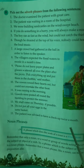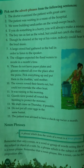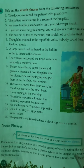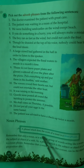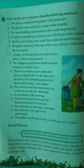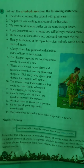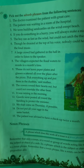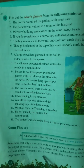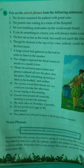Last of all, the noun phrase. A phrase which does the work of a noun is a noun phrase. Remember that only a noun, or a word or group of words acting like a noun, can be the subject or object of a verb. So a phrase which is the subject or object of a verb is a noun phrase. Remember also that a noun phrase, like a noun, can be the object of a preposition.